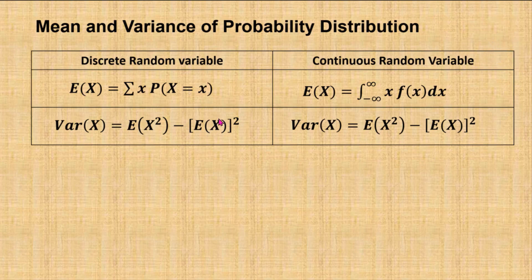If X is a discrete random variable, we use the sum to find E(X). And if X is a continuous random variable, we use integration to find E(X).